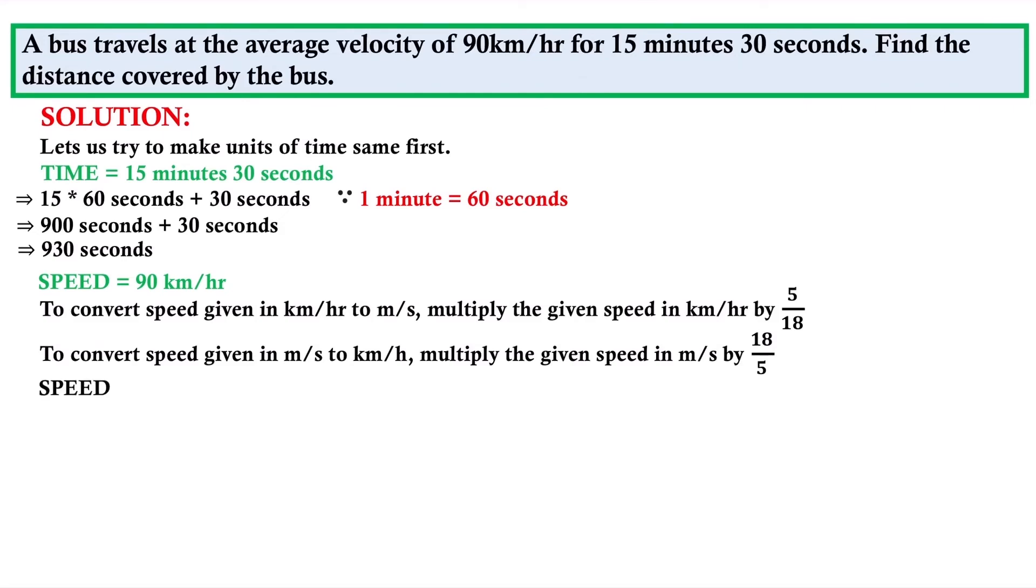The given speed is 90 km per hour. To convert to meter per second, multiply by 5 by 18. So 90 multiplied by 5 by 18. 18 into 5 - 5 into 90 divided by 18 equals 25 meter per second. So 90 km per hour is equal to 25 meter per second.